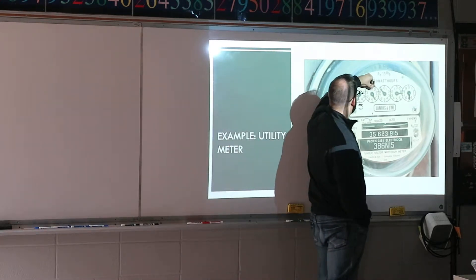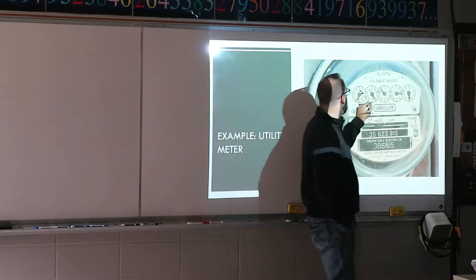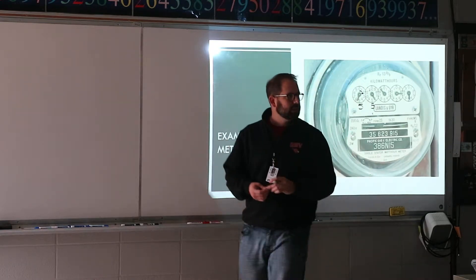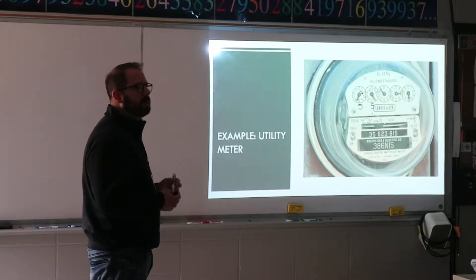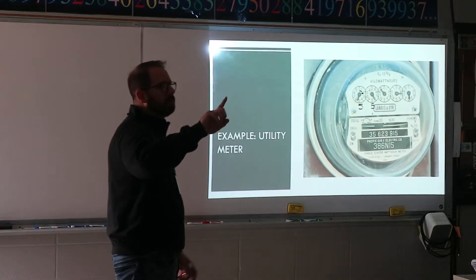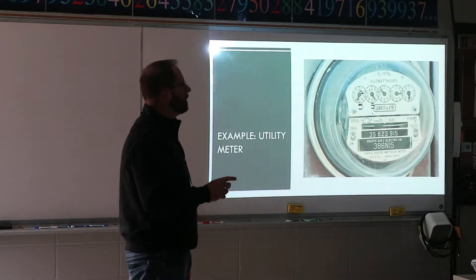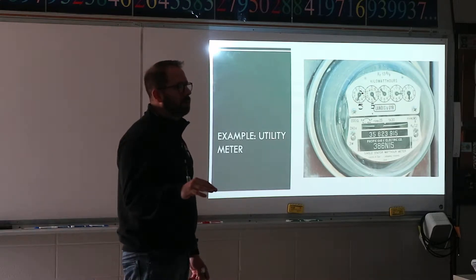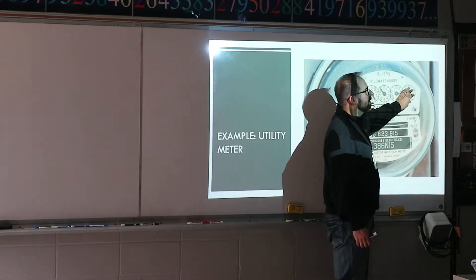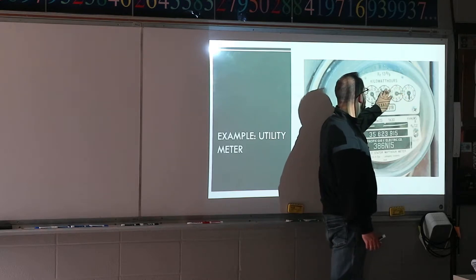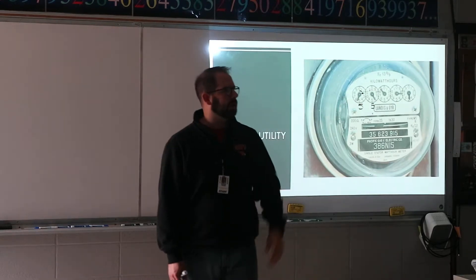When you read that first dial, it's at five and a half — so you read five. You only read off the whole number that it went past. You don't read the next number; you just read what it's already passed. It's at five currently, moving towards six, but it hasn't reached it yet. The next dial goes the opposite direction. I can see zero, one, two — so the next one is five again. It didn't quite make it to six, so it's at five currently.